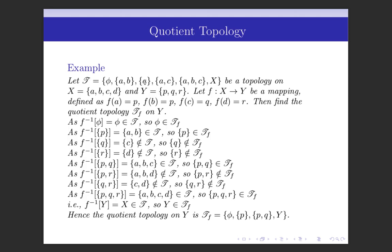Now we shall discuss an example based on the quotient topology. Let T be a topology on the set X = {A, B, C, D}, where T consists of φ, {A, B}, {A}, {A, C}, {A, B, C}, and X. Let Y = {P, Q, R} and F be a mapping from X to Y defined as: F(A) = P, F(B) = P, F(C) = Q, and F(D) = R. Then find the quotient topology.